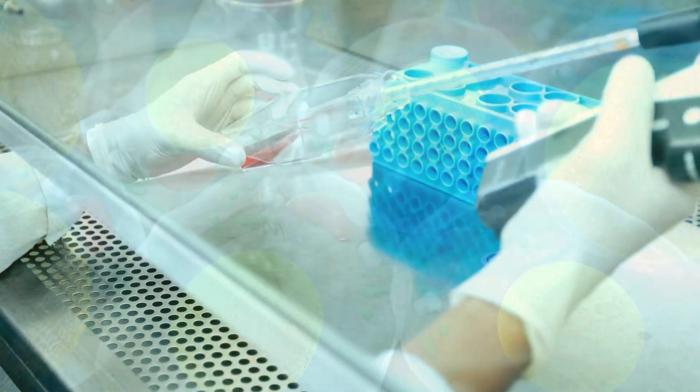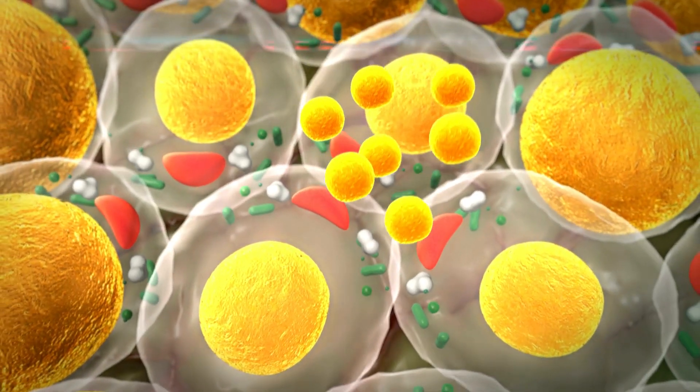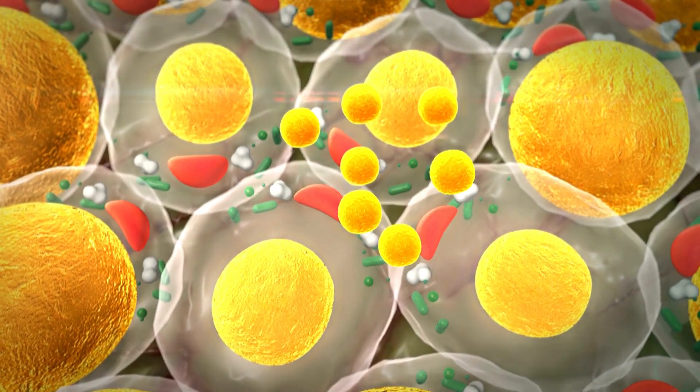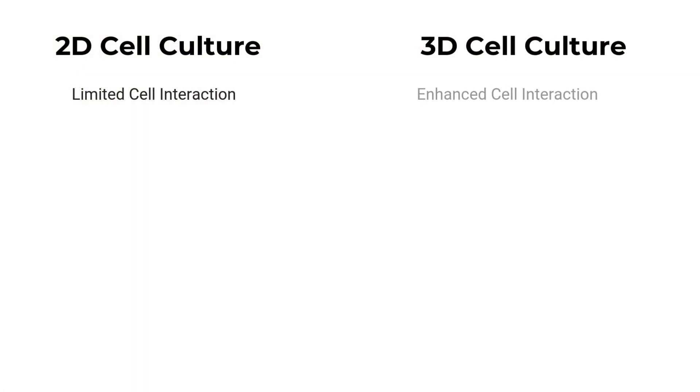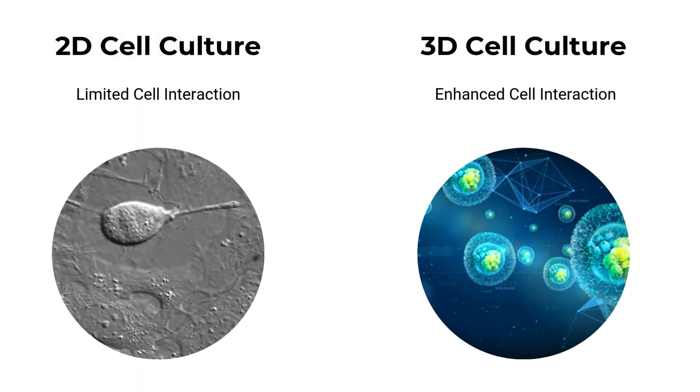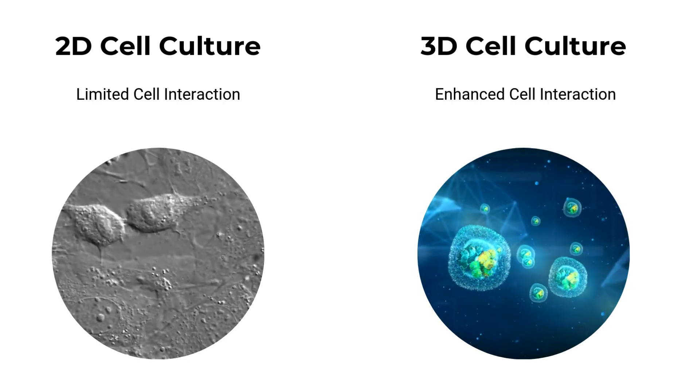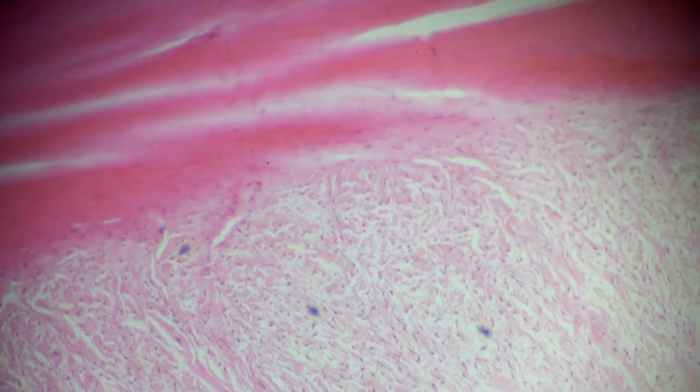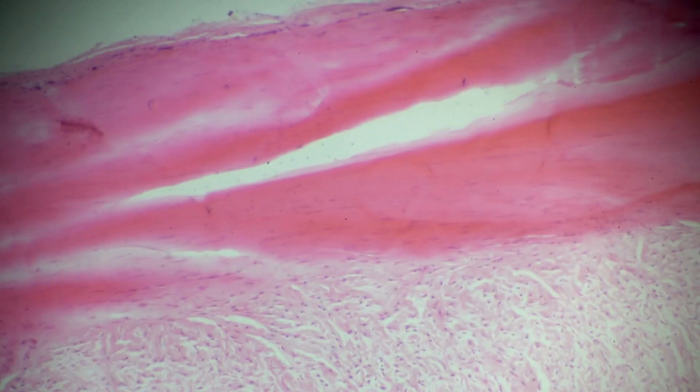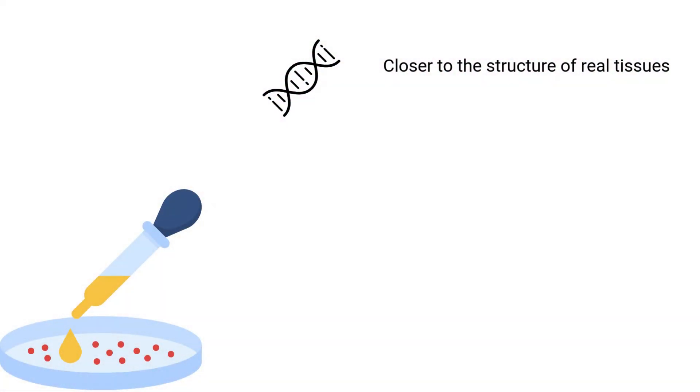In contrast, 3D cell culture provides a more accurate simulation of in vivo conditions. Imagine cells growing in a 3D scaffold that allows them to expand and interact in all three dimensions. 3D cell culture more closely resembles the natural tissue environment, fostering realistic cellular behaviors.